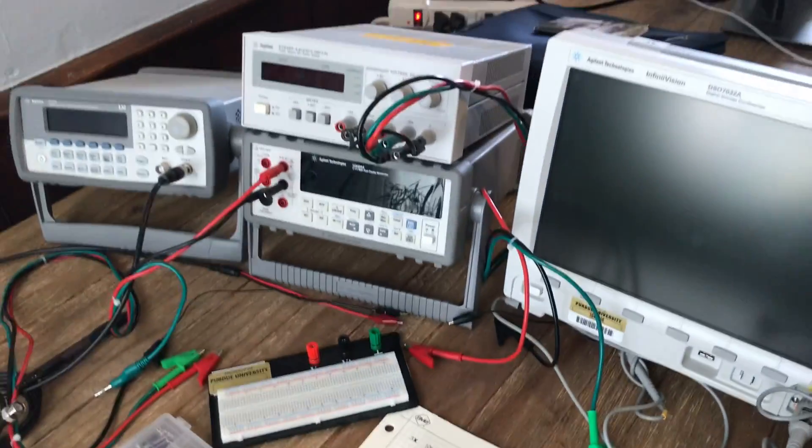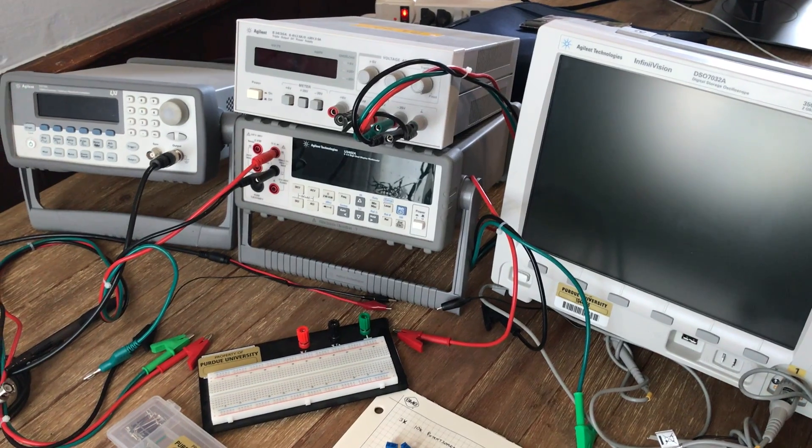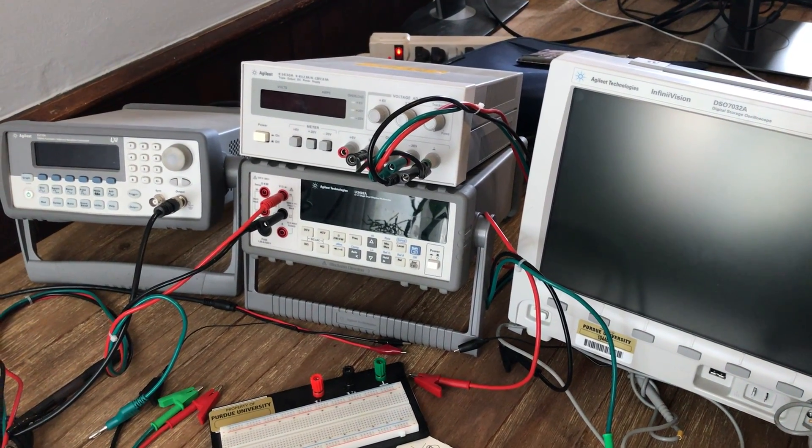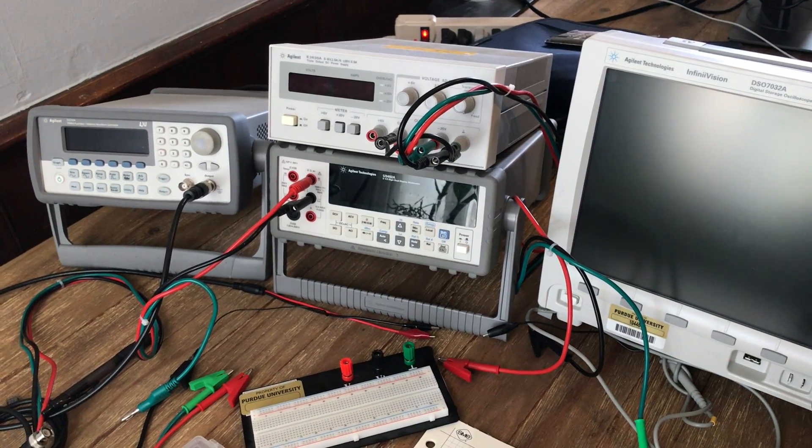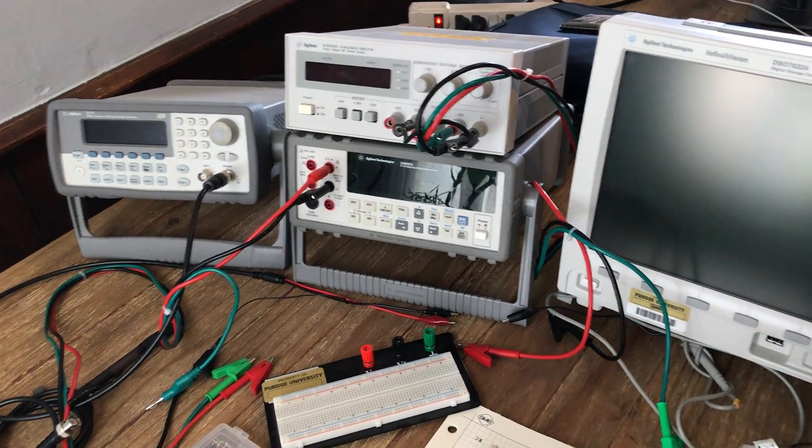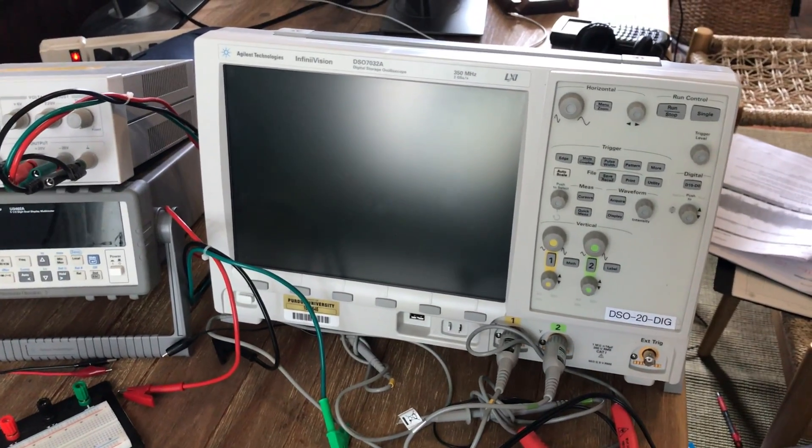I also have my lab station set up, so you can see there I've got a function generator for testing circuits. I've got a triple output power supply on the top there. Below that I have my DMM, so voltage meter, current meter, and ohm meter. And then over here I've got my oscilloscope.